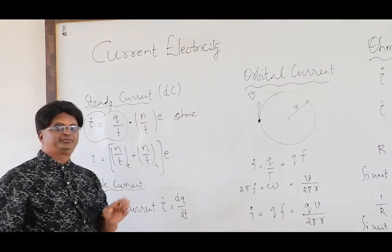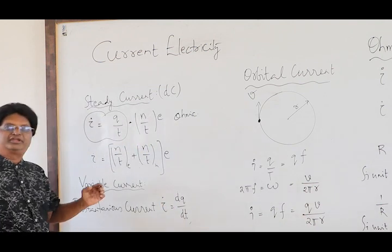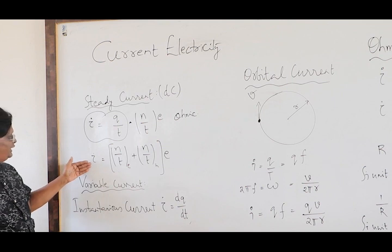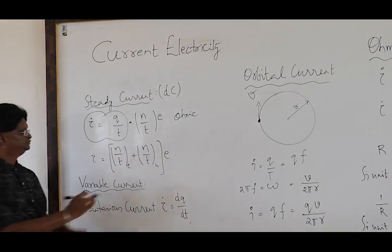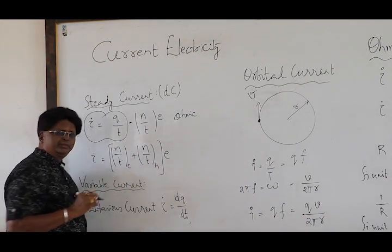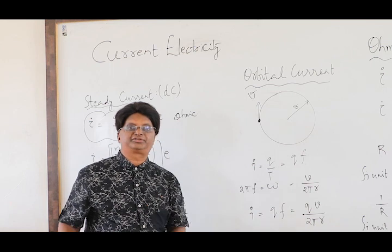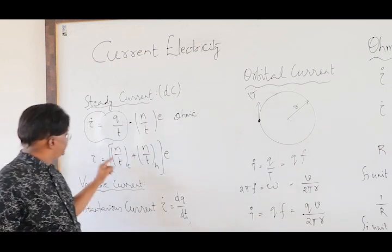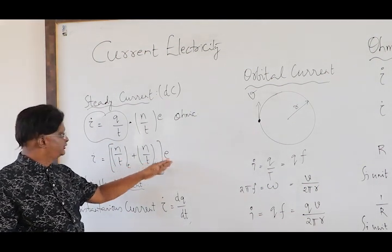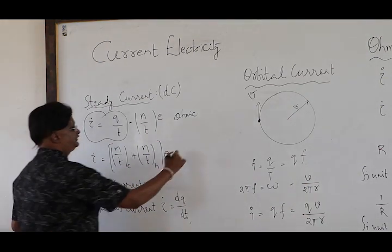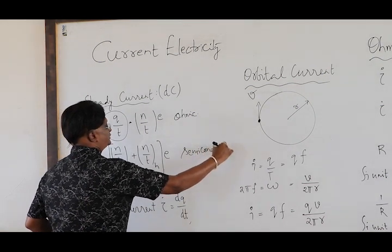In the case of non-ohmic conductors such as semiconductors, we have both electrons and holes. So the expression changes slightly: I = (rate of flow of electrons + rate of flow of holes) × e. Remember, the hole and electron currents will be in the same direction — in fact, they move in opposite directions, but the current direction is same, and hence we add them. This is for semiconductors — one important thing to remember.